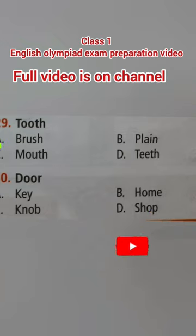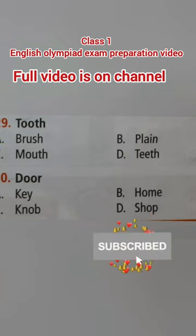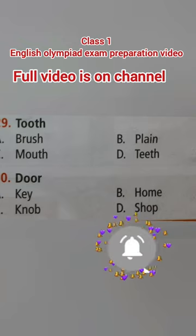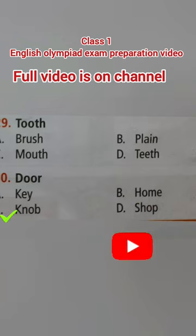The right option is Option A — brush. Toothbrush. Tenth: door. Option A: key, Option B: home, Option C: knob, Option D: shop. The right option is Option C — knob. Doorknob.